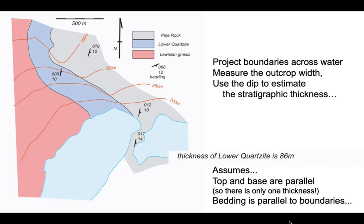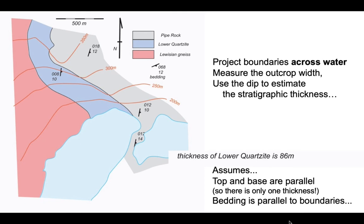So that's the method. It's really straightforward. It shows the importance of taking boundaries down to the water's edge so that we can then simply project boundaries across the water, measure the outcrop width and use the dip to do that simple bit of trigonometry. A really simple method of estimating stratigraphic thicknesses using the outcrop width on maps.